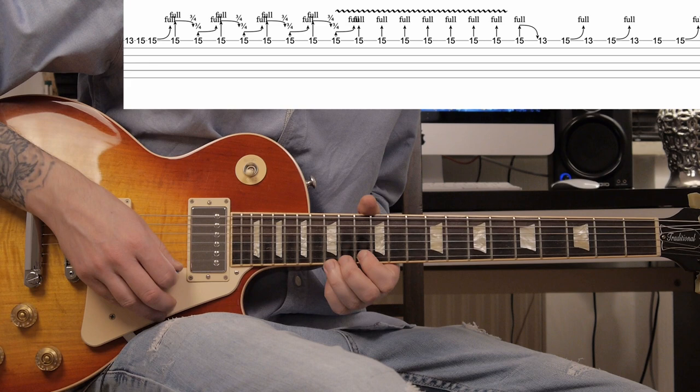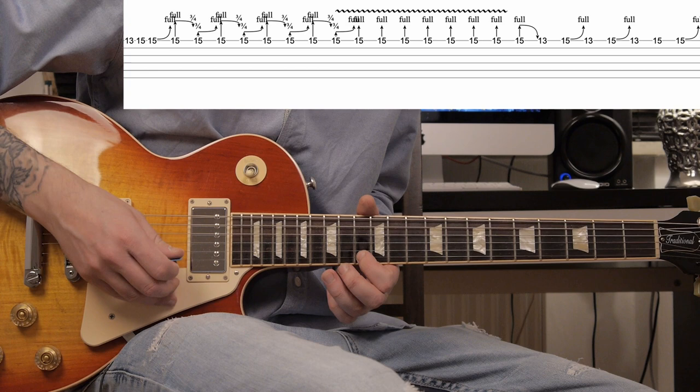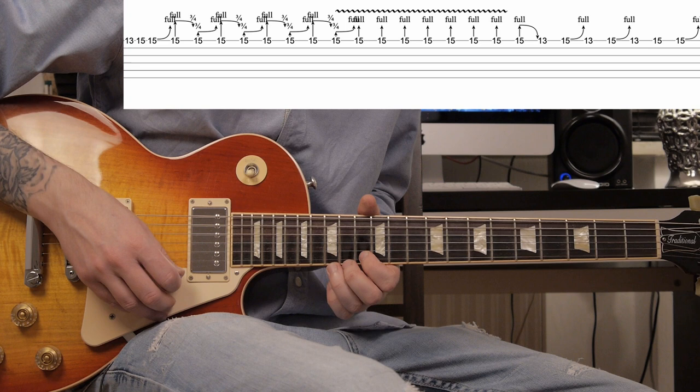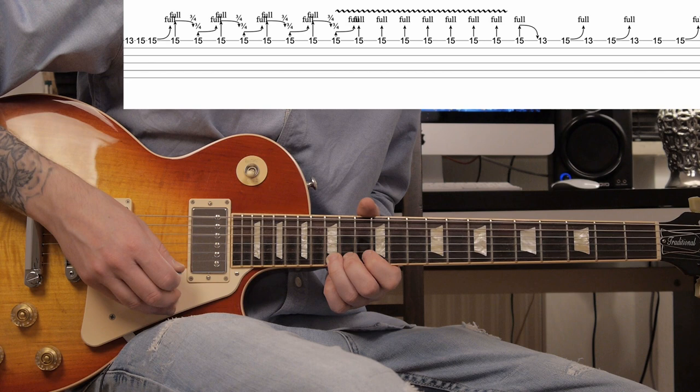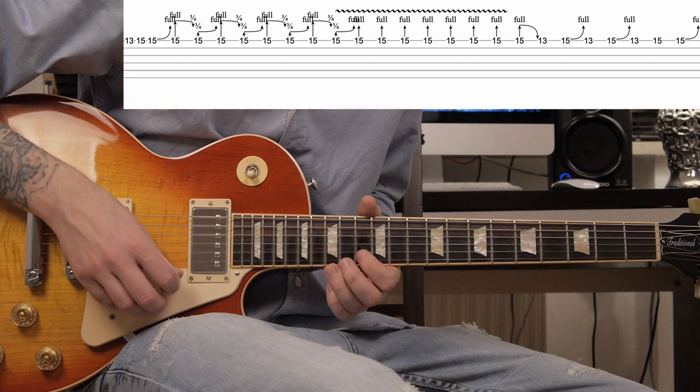Next is a full tone bend on fret 15 again, fret 13 on the high E string again, full tone bend fret 15 again, fret 13 again, 15 again no bend, and full tone bend fret 15.